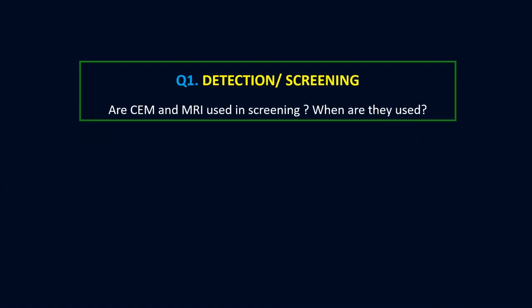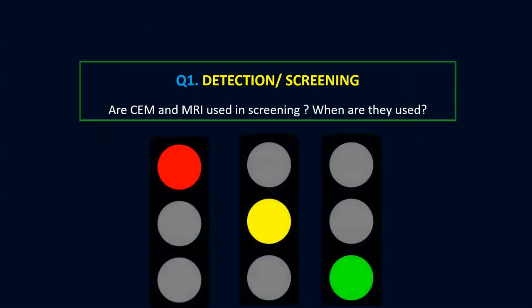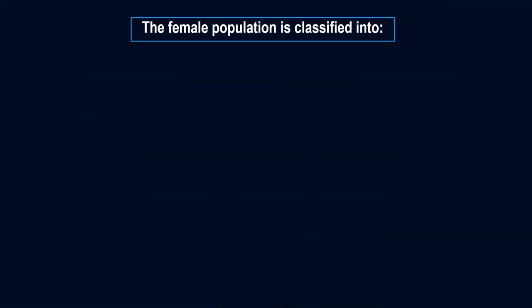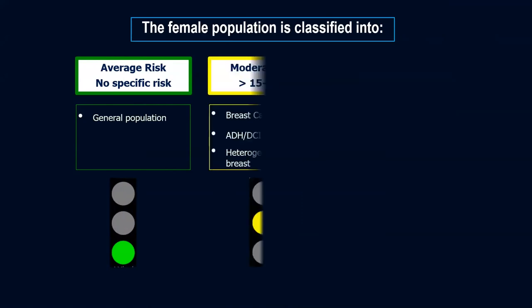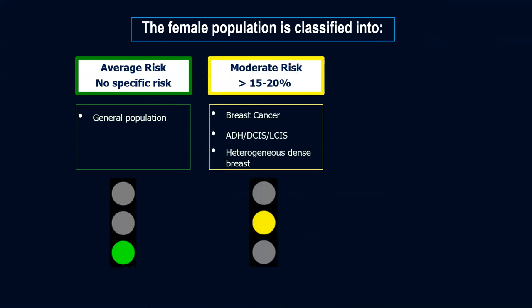In detection or screening, I usually say we will follow the traffic lights. We classify the female population into average risk individuals — those with no specific risk for developing breast cancer — and moderate risk individuals who have a 15 to 20 percent higher incidence than the general population. Moderate risk includes patients with past history of breast cancer, those who had proliferative lesions with malignant potential removed, and those with heterogeneously dense breast parenchyma.